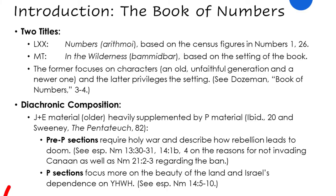This book chronicles Israel's time of formation in the wilderness — this is the time where Israel learns how to be God's holy people and indeed struggles quite a bit. Diachronically, most of this book is from either J and E — older material — but it's supplemented by P material. Scholars make a distinction: the pre-P sections, that is the J and E sections, talk about holy war and describe how rebellion leads to doom. Contrast that with the P sections that focus more on the beauty of the land and Israel's dependence on the Lord.